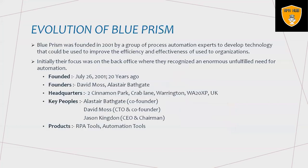Regarding how Blue Prism has evolved: in July 2001, about 20 years ago, Stewart Mossop and Alastair Bathgate started this RPA company called Blue Prism in the UK. The founders are David Moss, Jesus Kinsman, and Alastair Bathgate, who introduced RPA-based automation tools initially focused on back-office processes. Due to AI and ML capabilities, this application has become more popular, and enterprises have started using it for automation and COE capabilities.